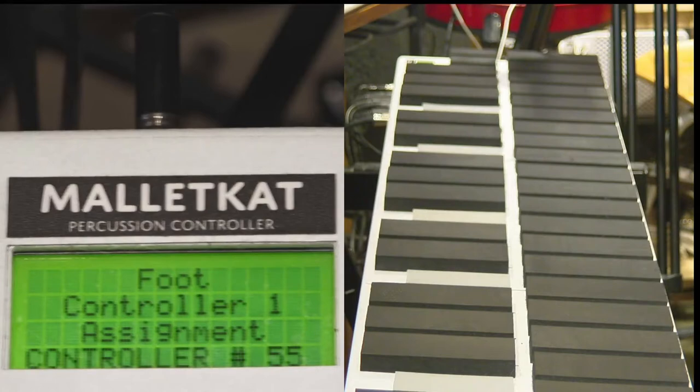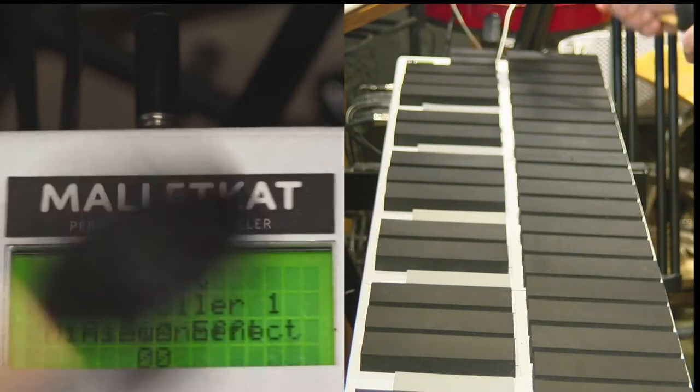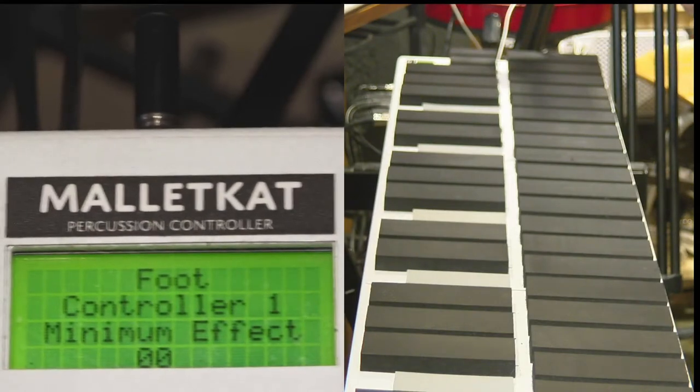Here you can assign the foot controller number, hit the forward key, and set the minimum effect of the controller, meaning that when you put the pedal all the way down, you're going to get that value.